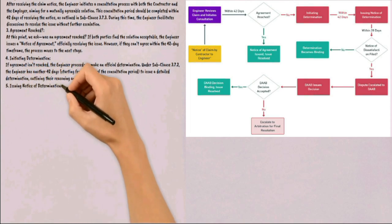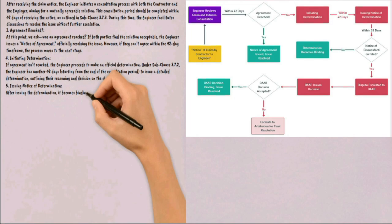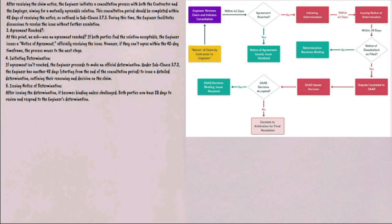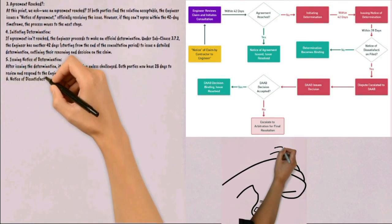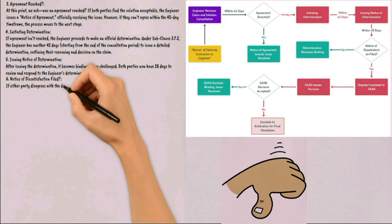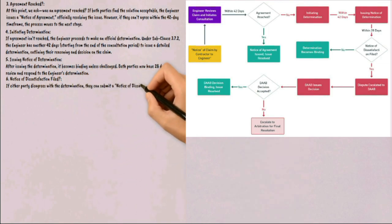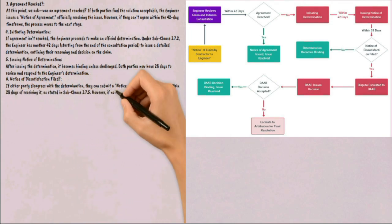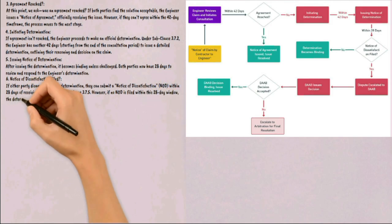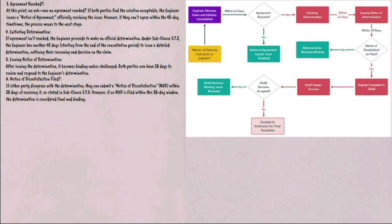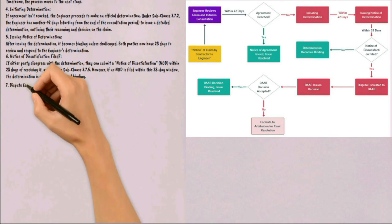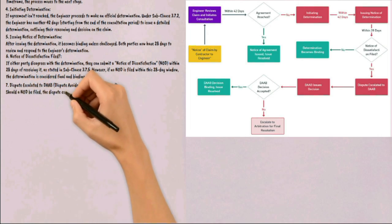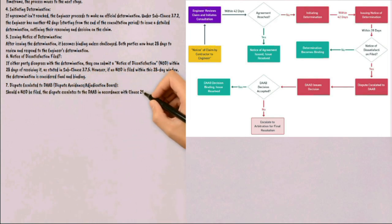Step 5: Issuing Notice of Determination — after issuing the determination, it becomes binding unless challenged. Both parties now have 28 days to review and respond to the engineer's determination. Step 6: Notice of Dissatisfaction Filed — if either party disagrees with the determination, they can submit a Notice of Dissatisfaction within 28 days of receiving it, as stated in Sub-clause 3.7.5. However, if no Notice of Dissatisfaction is filed within this 28-day window, the determination is considered final and binding. Step 7: Dispute Escalated to DAB — should a Notice of Dissatisfaction be filed, the dispute escalates to the Dispute Avoidance Adjudication Board in accordance with Clause 21.4, which then reviews the case and issues a binding decision.